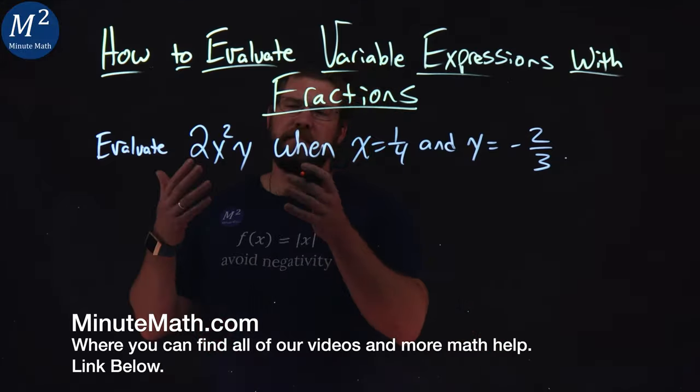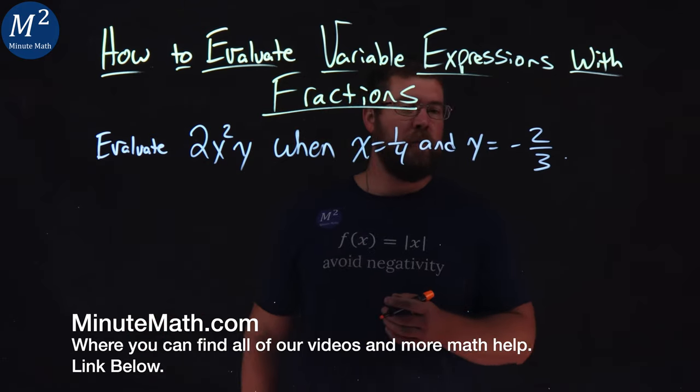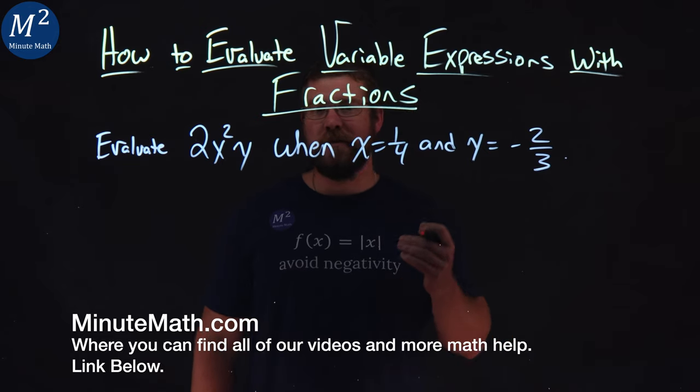We're given this problem here. Evaluate 2x squared times y when x equals 1/4 and y equals negative 2/3.